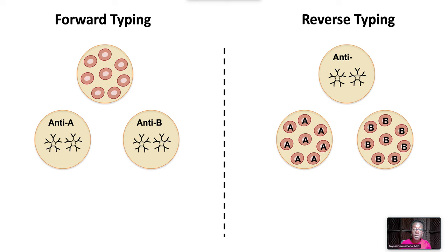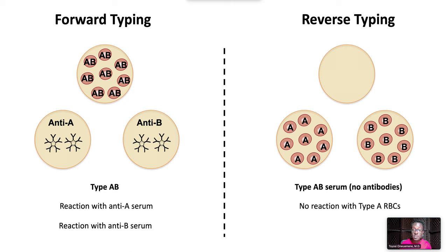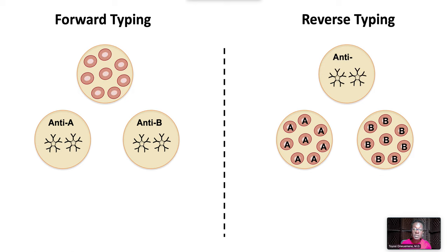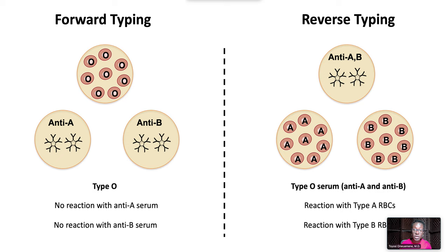If the unknown red cells are type AB, forward typing will show a reaction with anti-A serum and a reaction with anti-B serum. Reverse typing with AB serum, which has no antibodies, will show no reaction with type A red cells and no reaction with type B red cells. If the unknown cells are type O, forward typing will show no reaction with anti-A serum and no reaction with anti-B serum. In reverse typing, the serum contains both anti-A and anti-B antibodies, which will cause a reaction with type A red cells and a reaction with type B red cells.